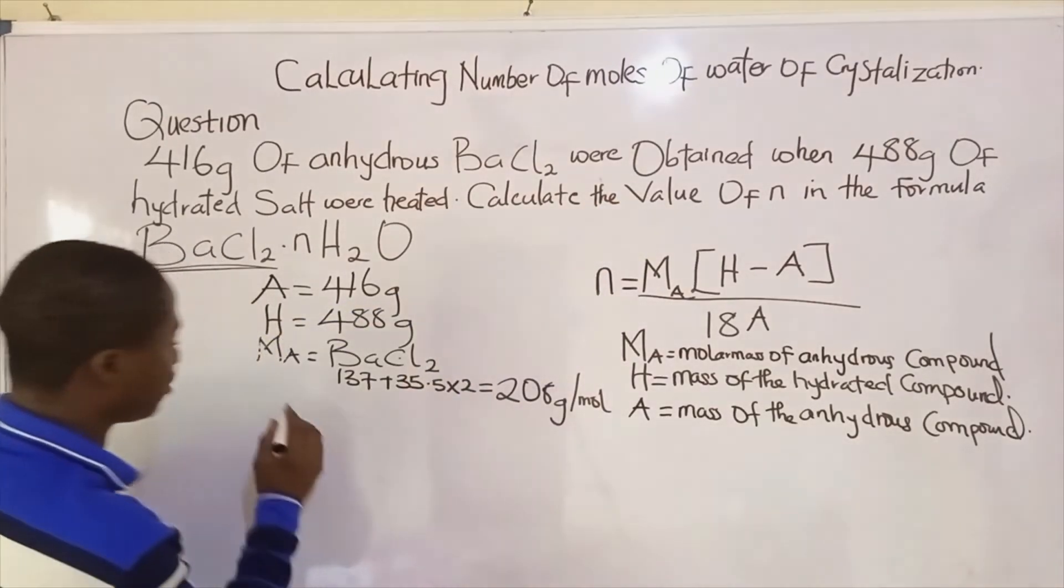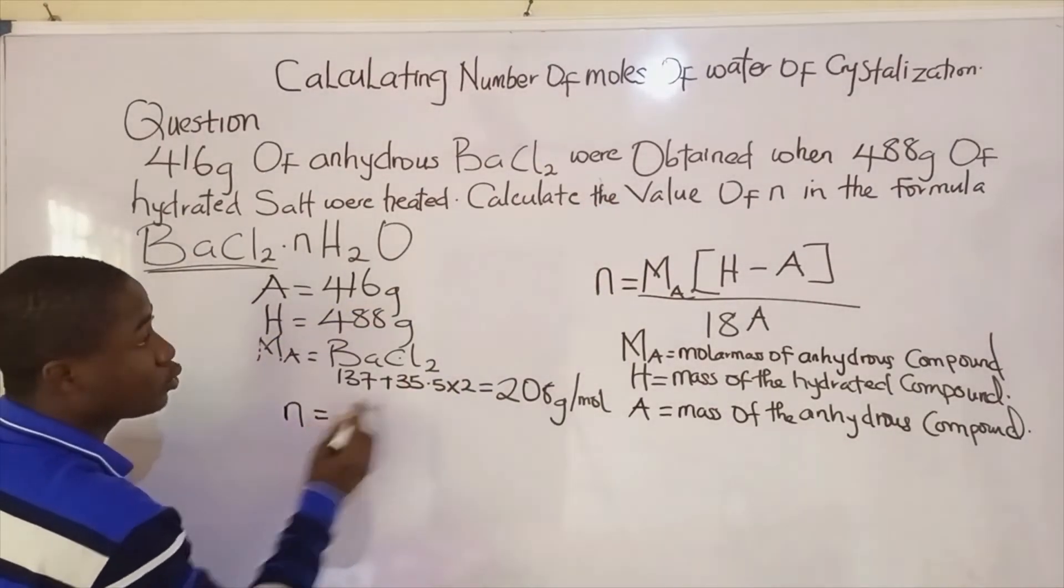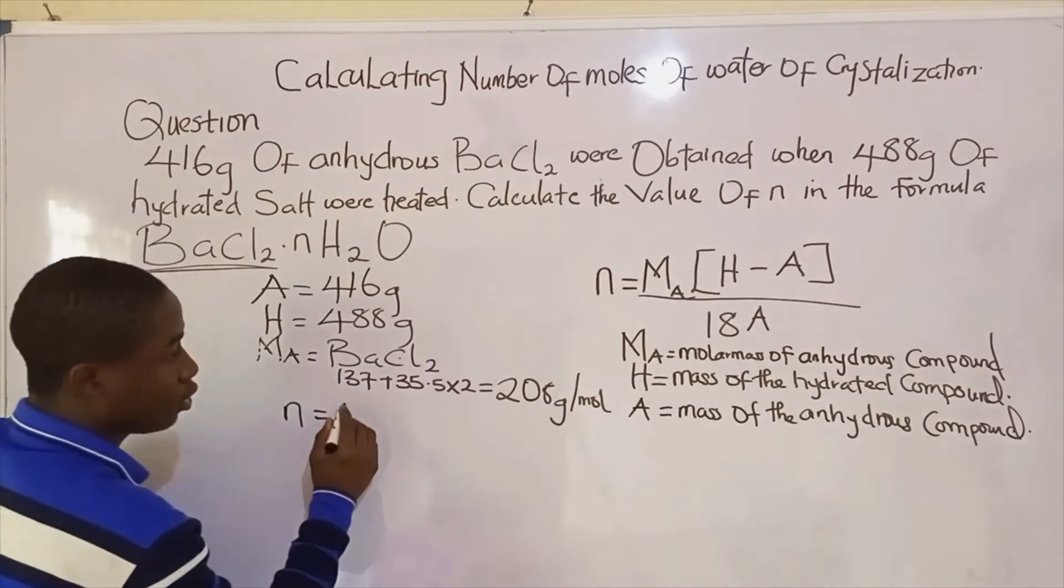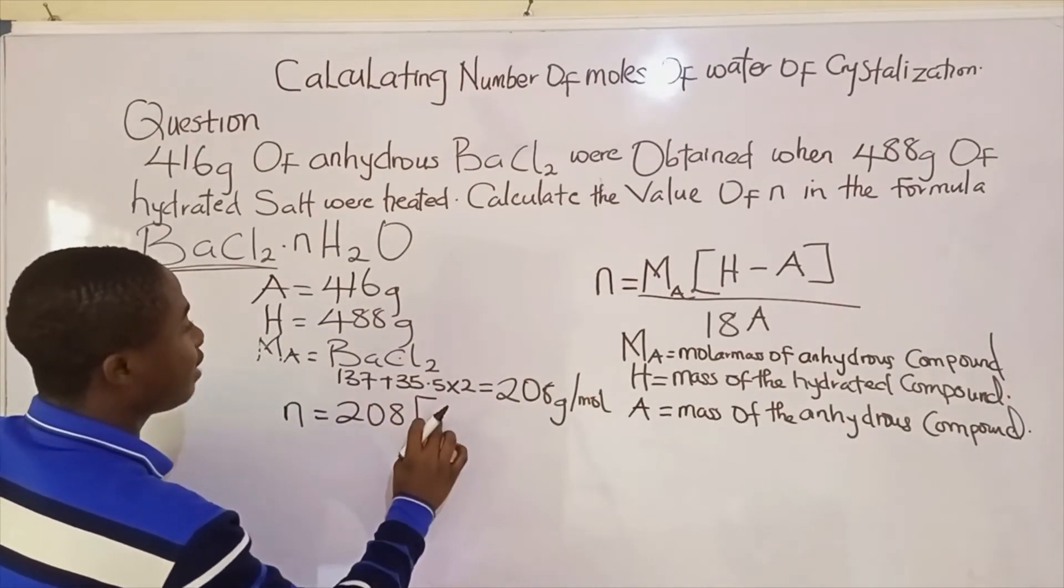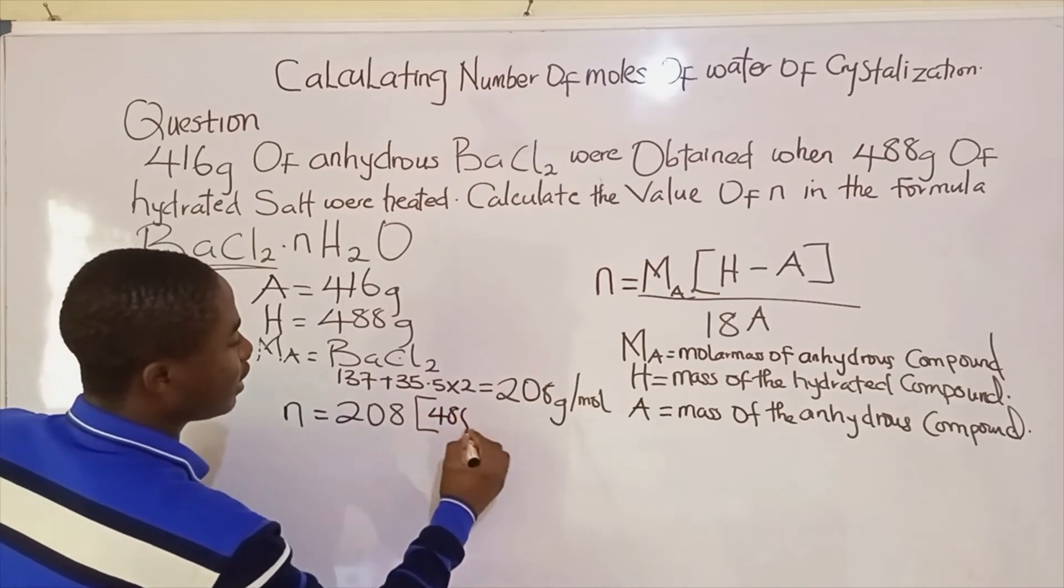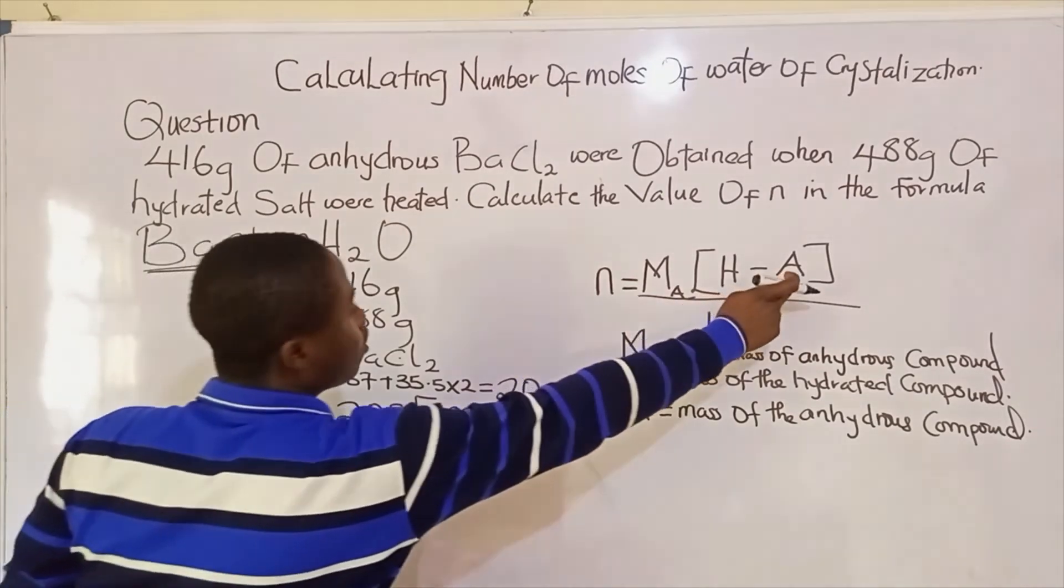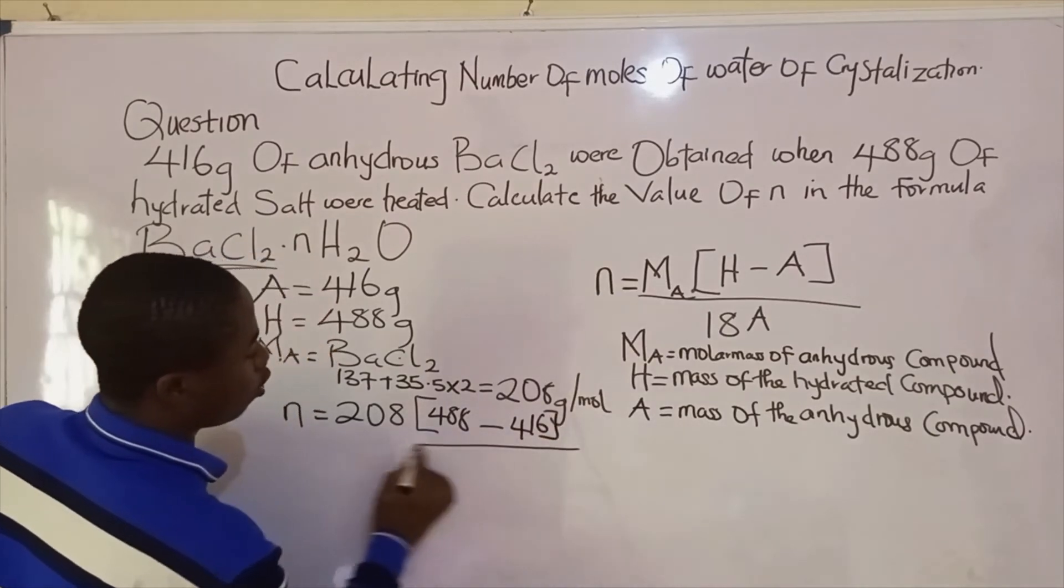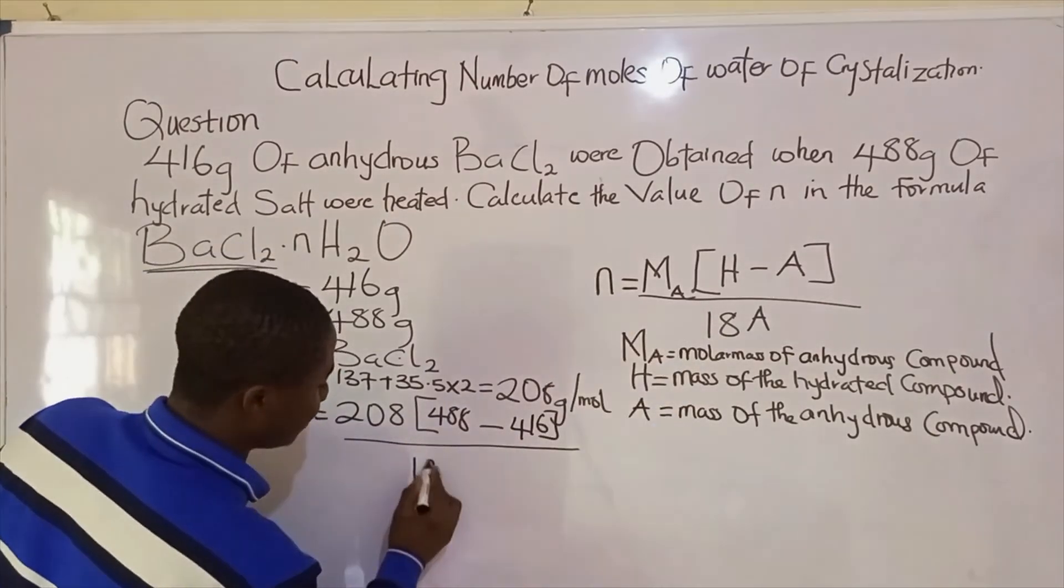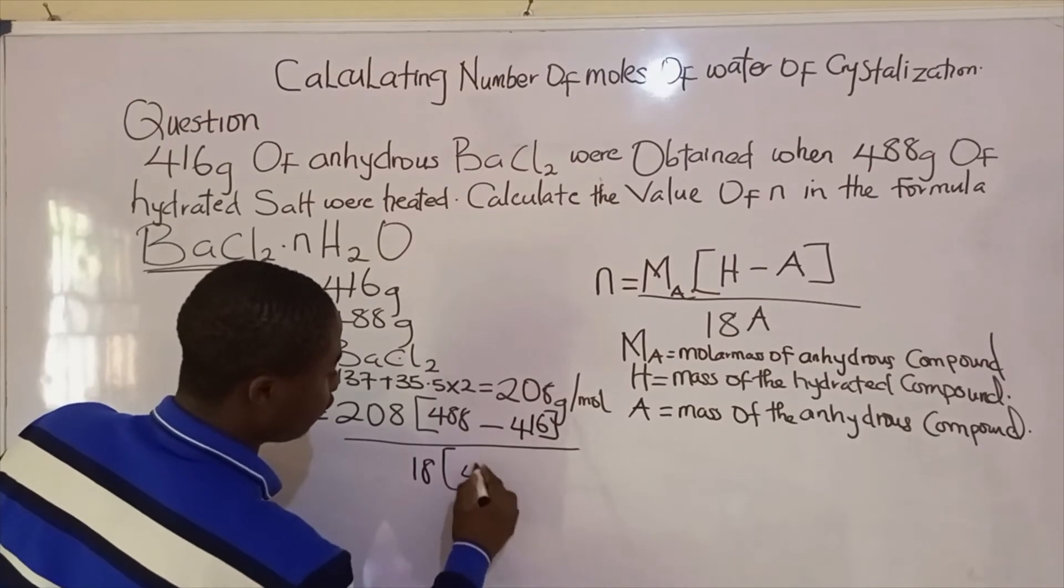So simply input parameters. So it becomes N will now be equal to the molar mass of the anhydrous salt which is 208 into the mass of the hydrated salt, 488, minus the mass of the anhydrous salt, 416 grams, all over 18 into A which is 416.